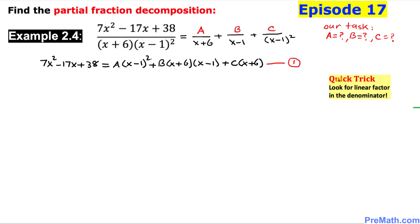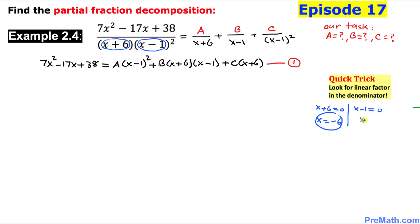Here is a quick trick: look for the linear factors in the denominator. We have x plus 6 and x minus 1 as our two linear factors. I am going to set both of them equal to zero. So the first gives x equal to negative 6, and the second gives x equal to positive 1.